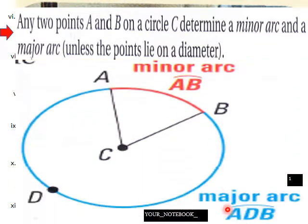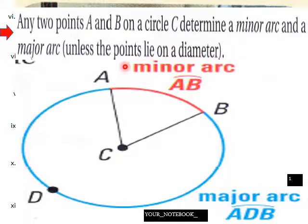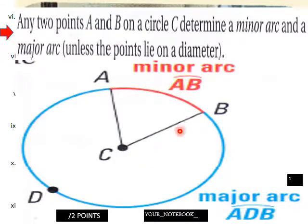In your notebook, students: any two points A and B on a circle C determine a minor arc and a major arc, unless the points lie on the diameter — in which case it's a semicircle. You'll always have a minor arc and a major arc unless it's a semicircle. Copy this down.